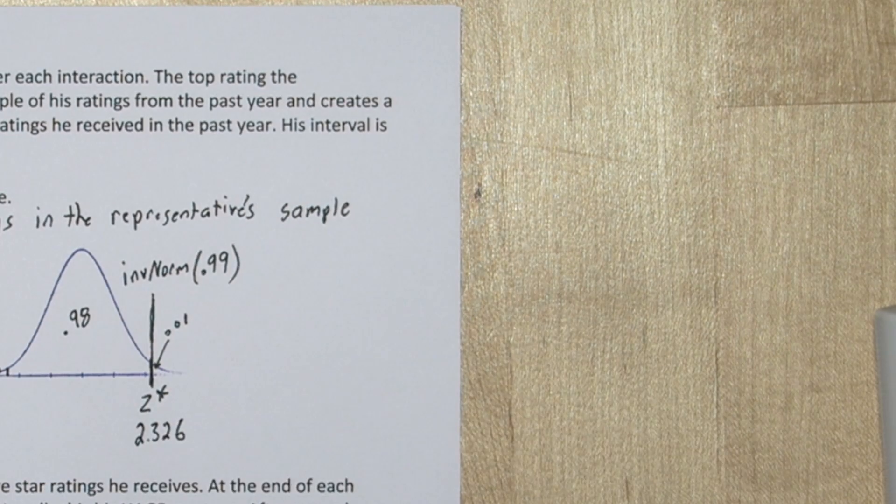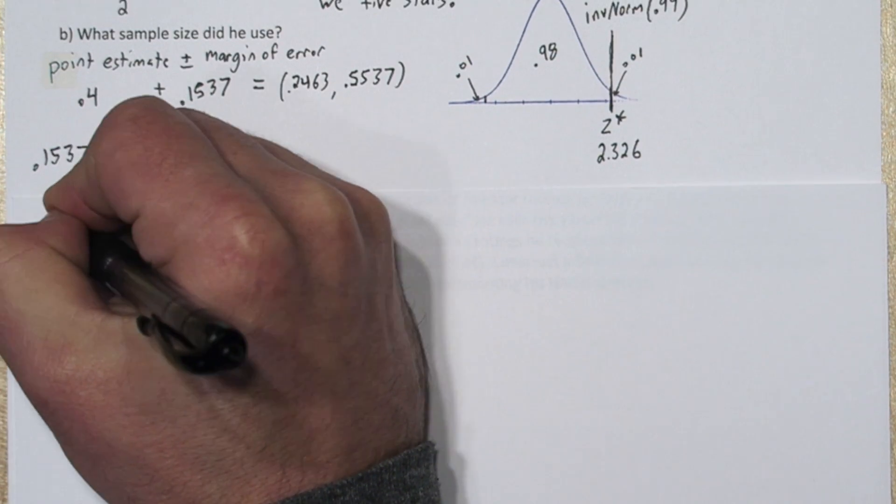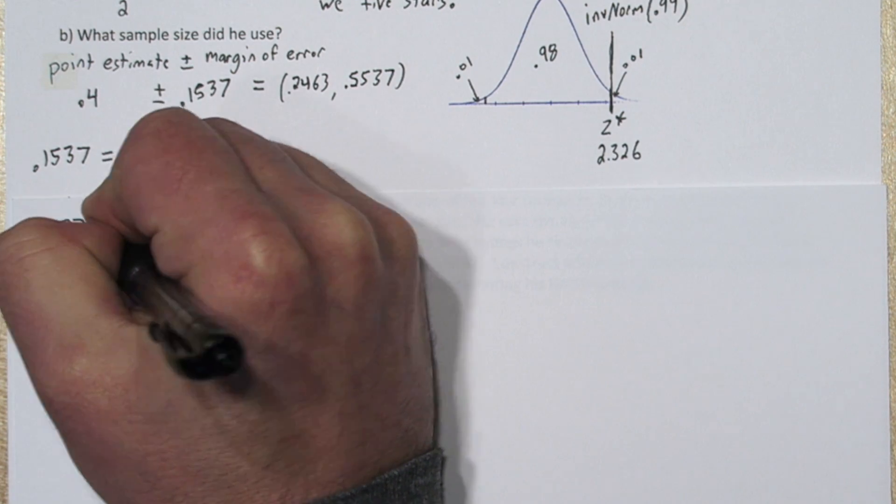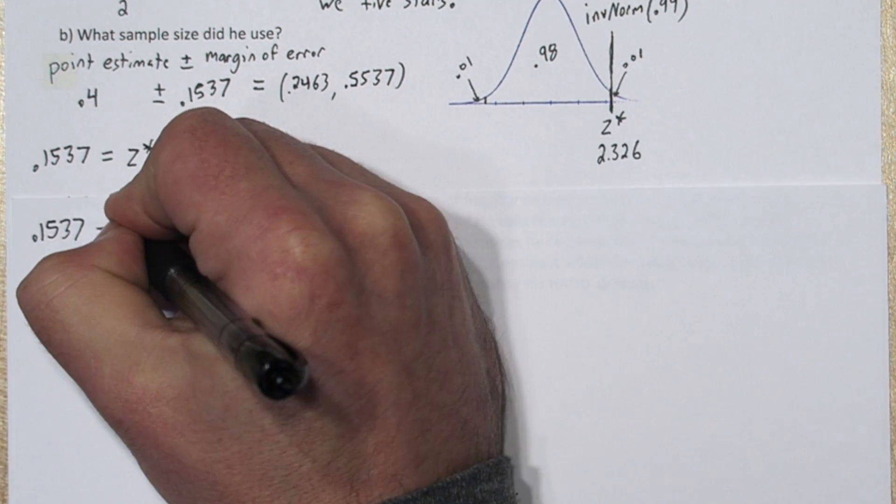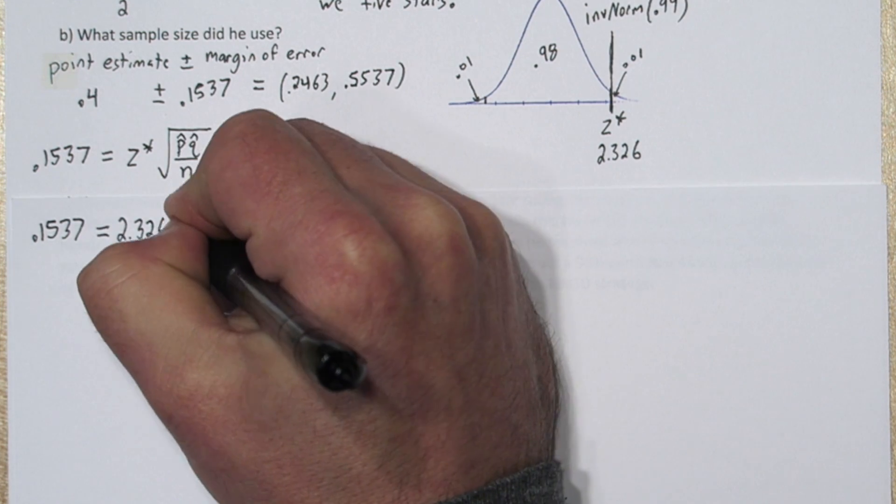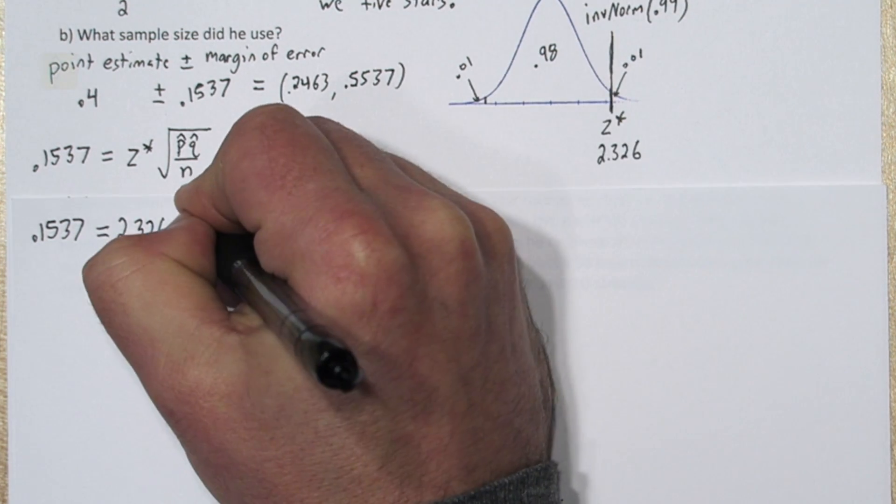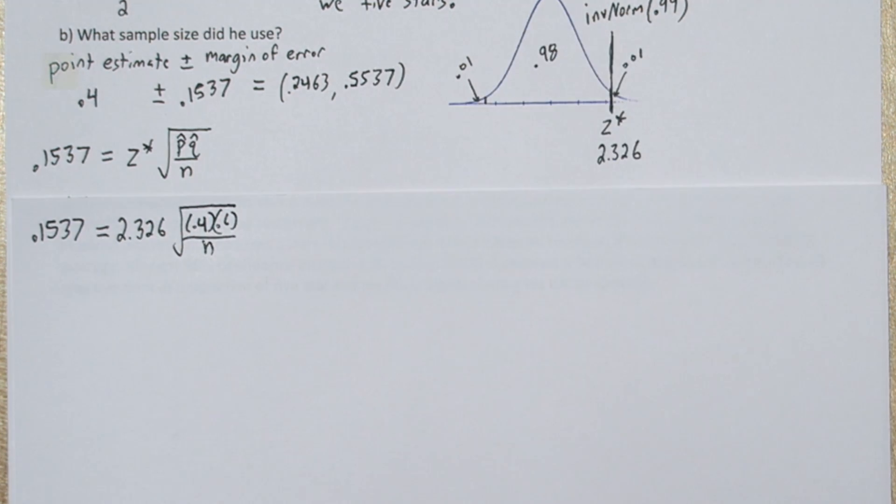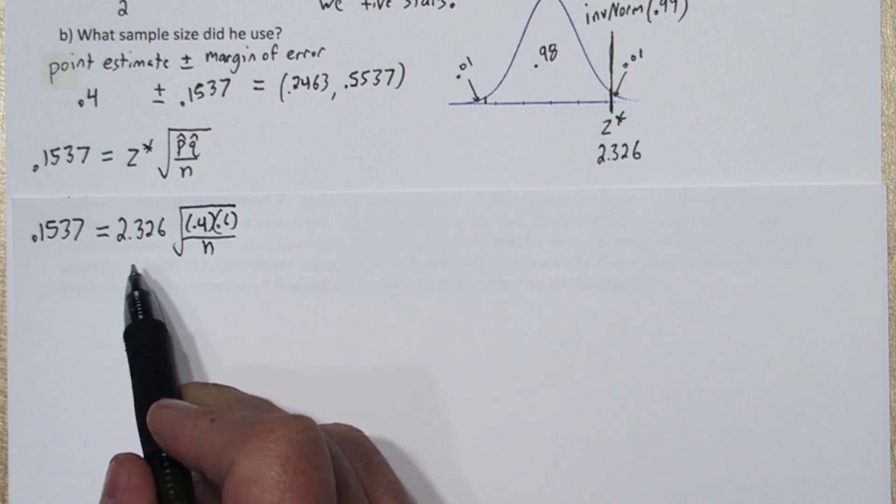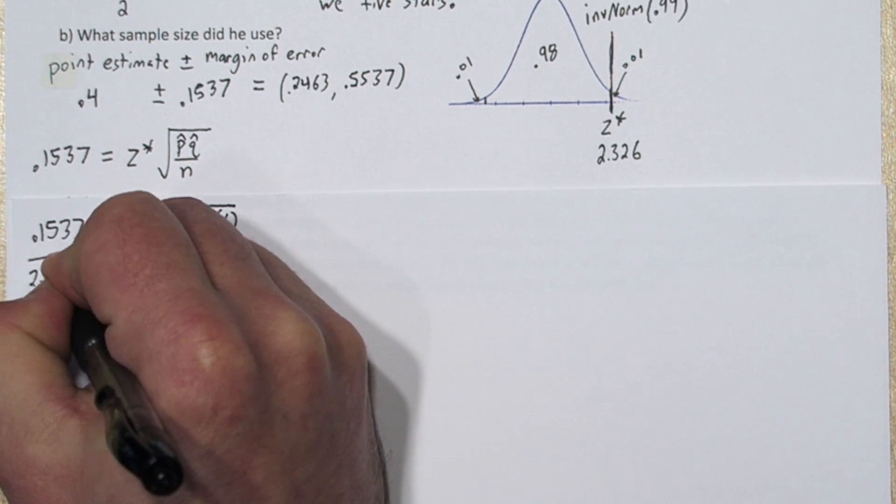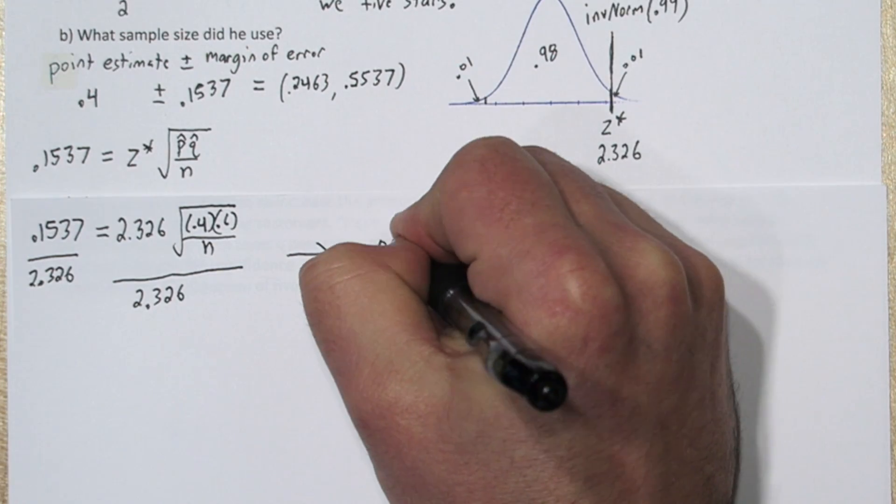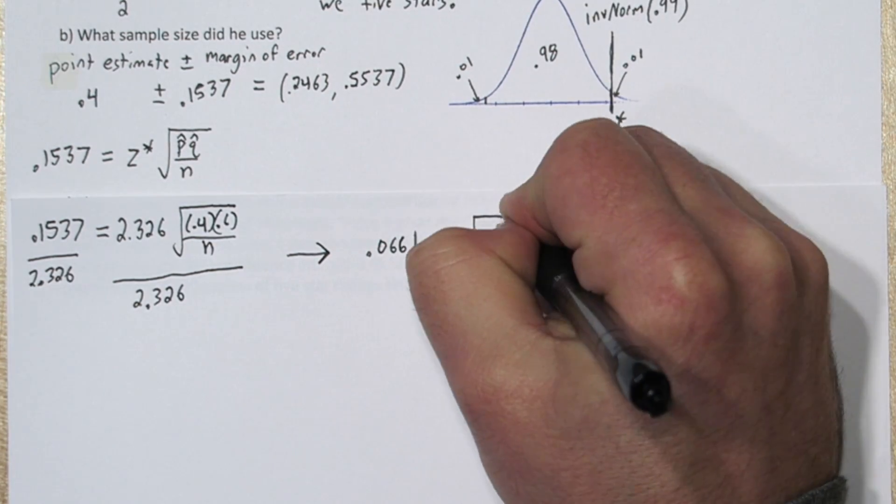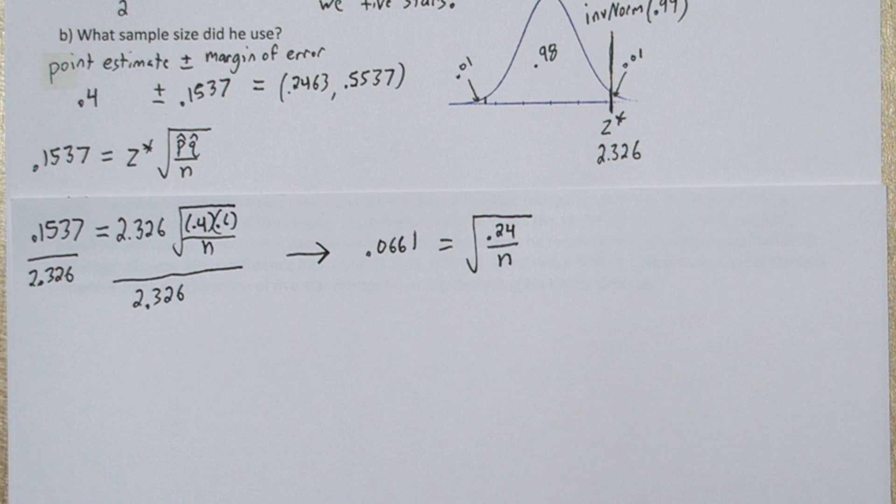Alright now let's do some algebra. So we know our margin of error equals 0.1537, and we just calculated our z star is about 2.326. We know what p hat and q hat are, 0.4 and 0.6, and the only thing we're missing is n. So if we just solve this equation for n, we'll know the sample size. Let's start by dividing both sides by 2.326. That leaves us with about 0.0661 equals the square root of 0.24 over n. So I went ahead and multiplied the 0.4 and 0.6 in the numerator.